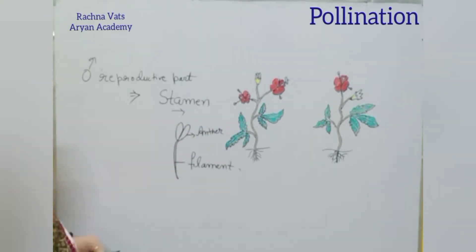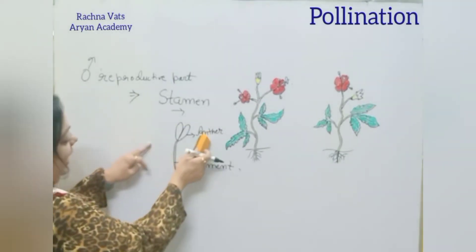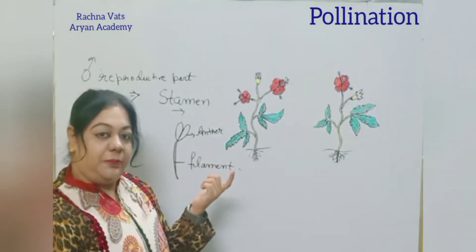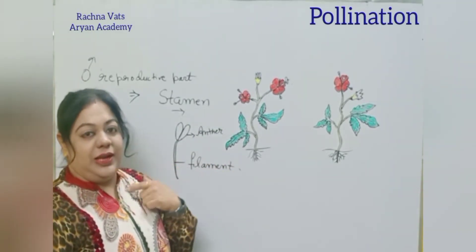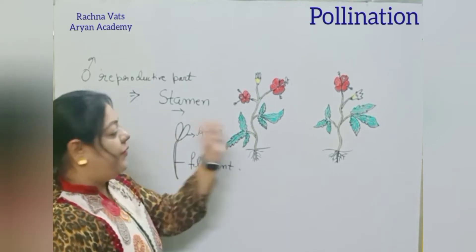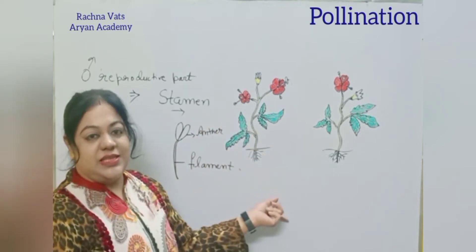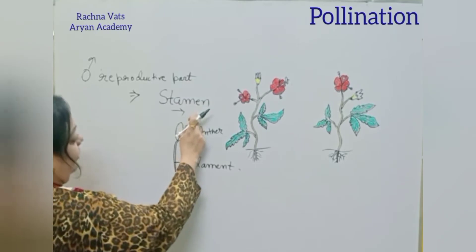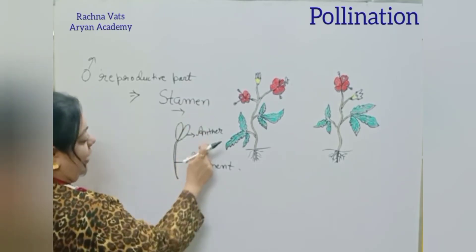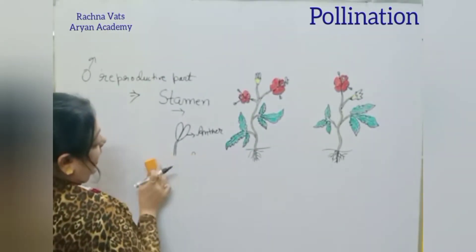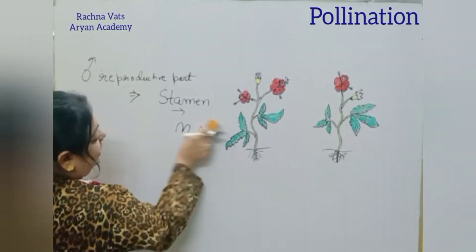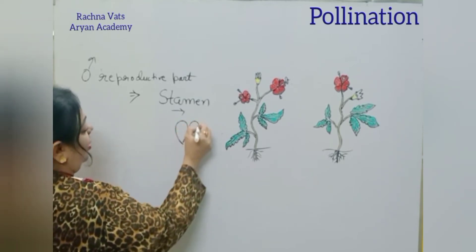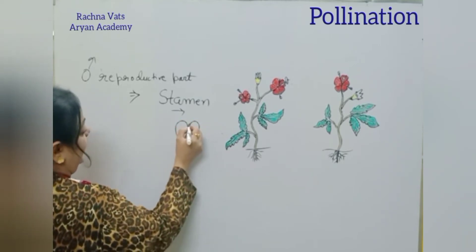The stamen consists of two parts basically: anther and filament. The anther is a bi-lobed structure. The main reproductive part of the stamen consists of anther and filament. Anther is basically a lobed structure.